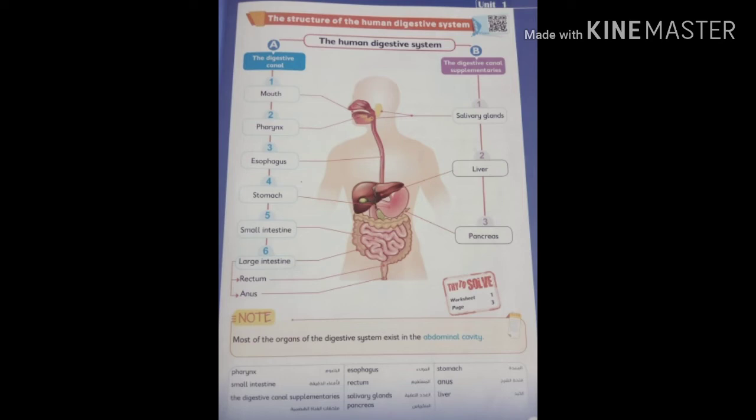Part two: digestive canal supplementaries has three organs. Number one, salivary gland; number two, liver; number three, pancreas.